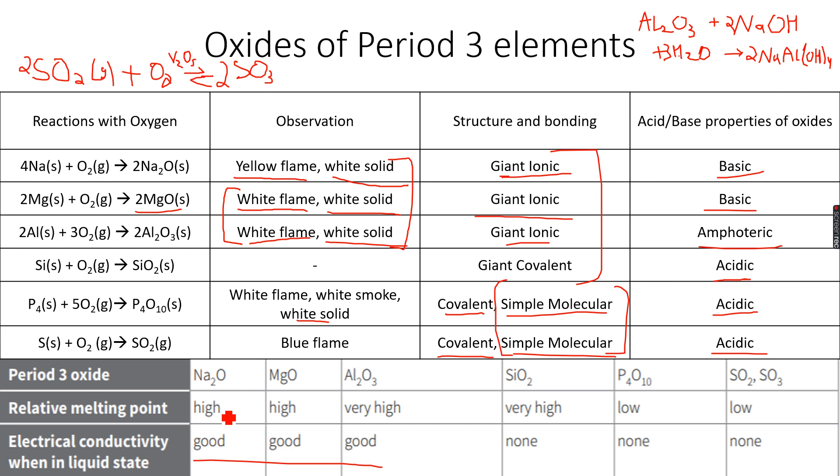Silicon dioxide does not conduct in the solid or liquid state because it does not have any free electrons or ions. P4O10, SO2, and SO3 do not conduct in any state because they do not have any free electrons or ions.